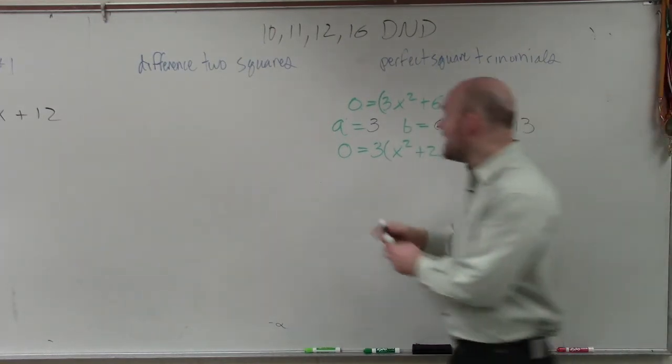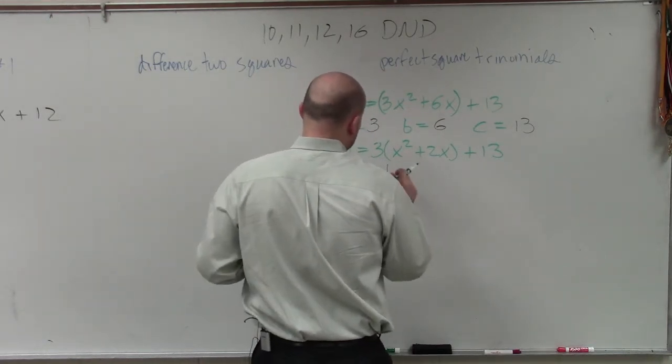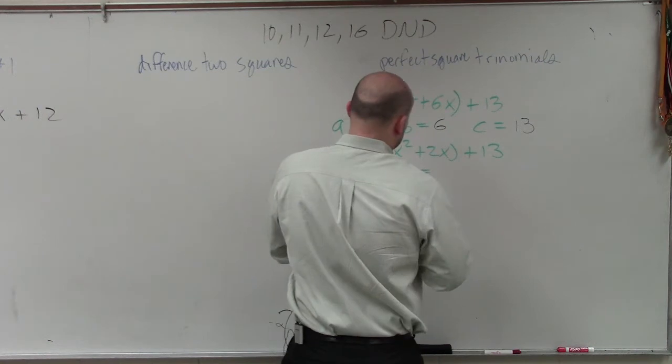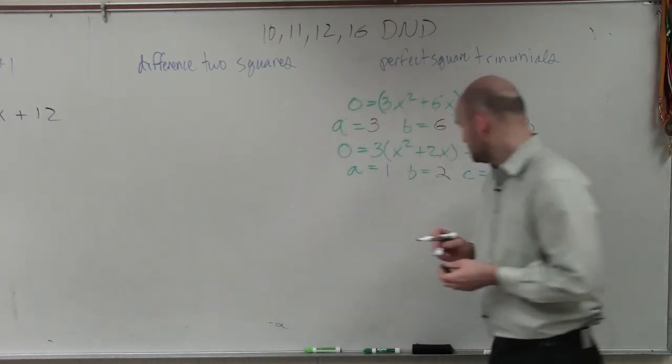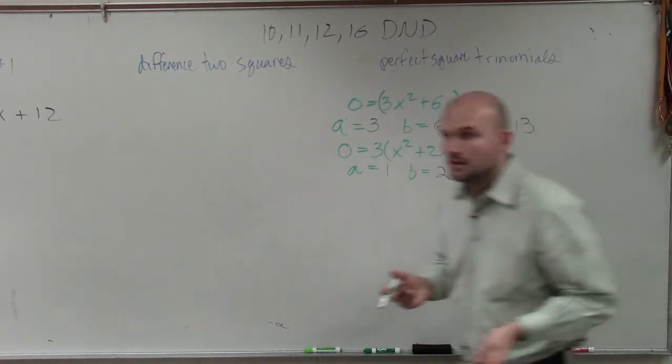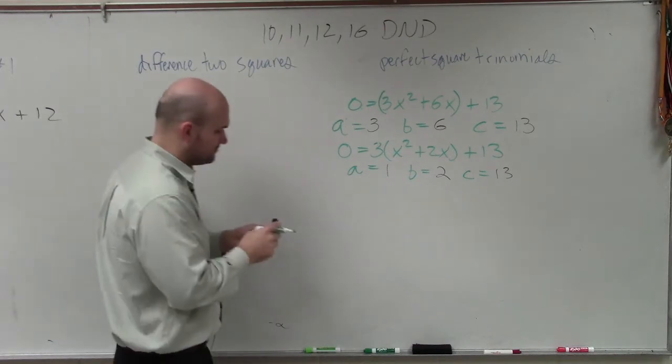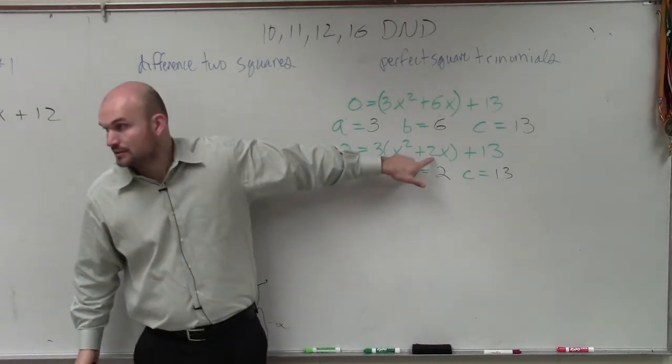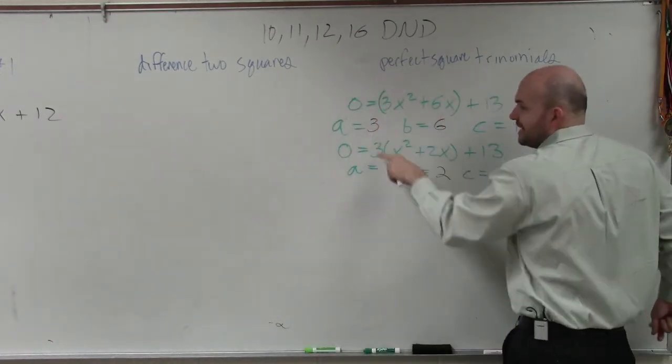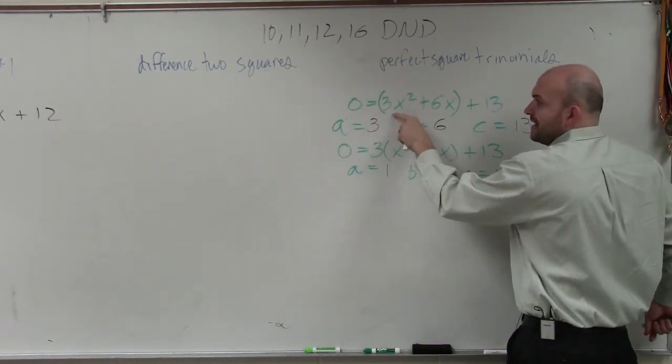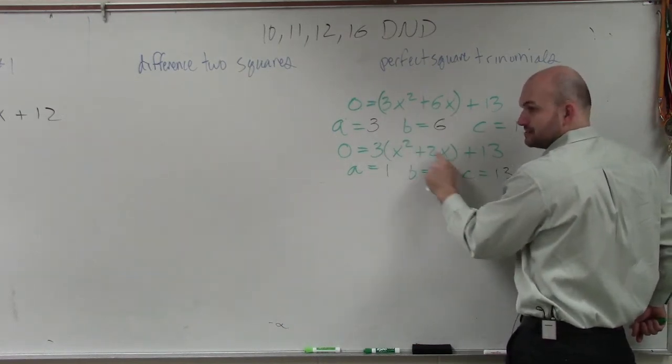But now, when doing this, now I have A is equal to 1, B is equal to 2, and C is equal to 13. Now I have A is equal to 1, so now I can do my process. How do you get 2? 2 is right there. No, but how do you get it from 6? I divided out 3. I divided out the 3. So 3x squared divided by 3 is just x squared. 6x divided by 3 is just 2x.